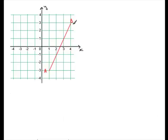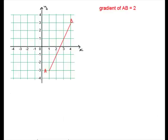Here we've got a line AB. You'll notice that for every one unit across — that is one unit increase in x — the y value increases by two units. We go one unit across and the y value increases by two units; one unit across, y value increases again by two units. We talk of this as having a gradient of two. So the gradient of AB is two.